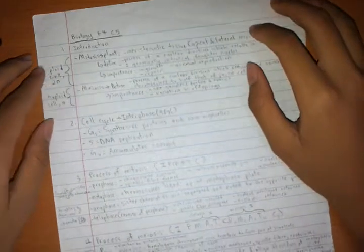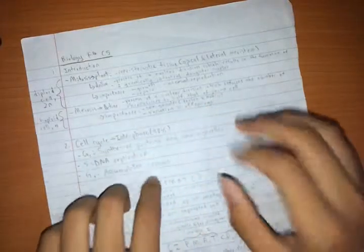Okay, welcome to biology class for Form 4, Chapter 5. In this introduction, you need to know two things: mitosis and meiosis. Later on, we'll talk about the cell cycle. That's all for this video.